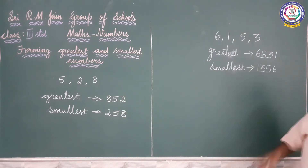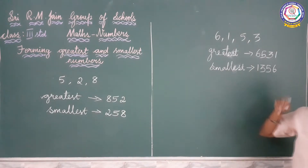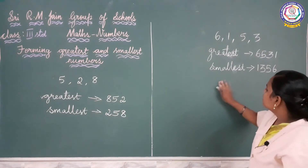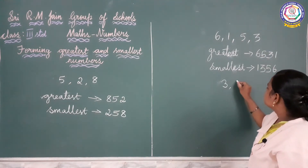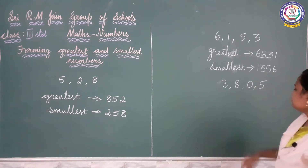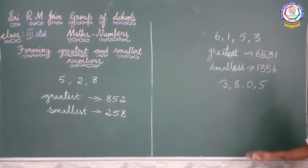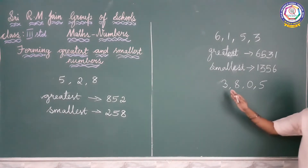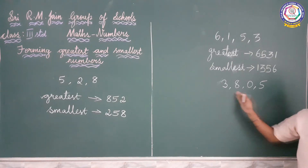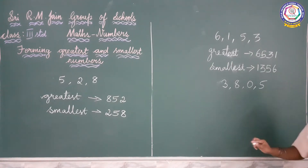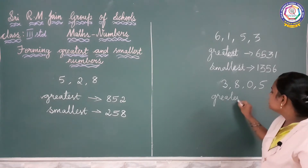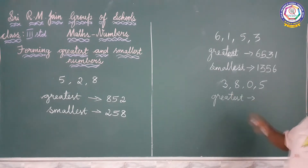Next one more example — I will explain using 0. Listen: 3, 8, 0, and then 5. Here also I have given 4 numbers — 3, 8, 0, 5. We have to compare the digits and then find out the greatest 4-digit number and then the smallest 4-digit number.